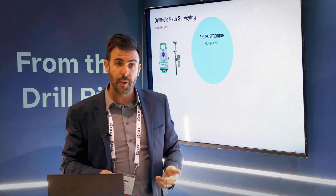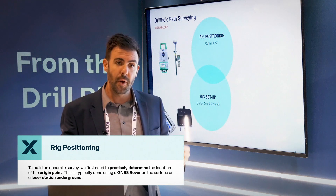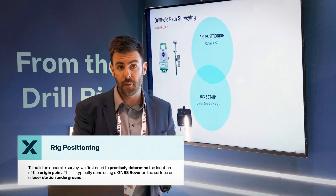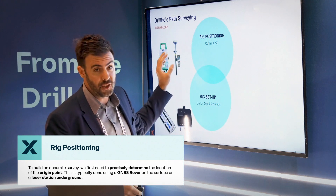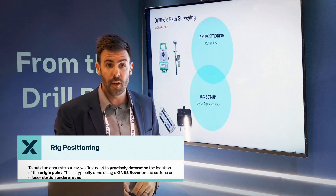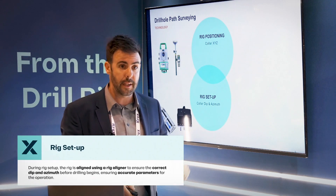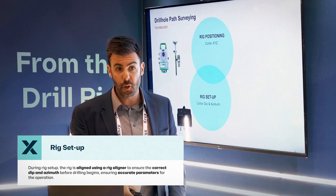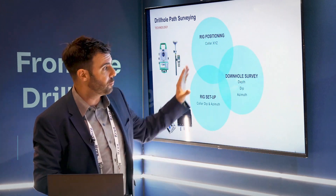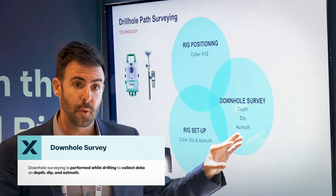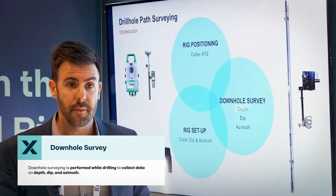In terms of the technology we use to build a survey, there are three parts. The first is knowing the location of the drill collar with very high accuracy — the collar XYZ coordinates — for which we typically use a GNSS rover at the surface or a laser station underground. Then the rig comes in and we use a rig aligner to align the rig to the correct dip and azimuth before drilling starts. Then we bring in a downhole survey tool once drilling has started to collect depth, dip, and azimuth data. Once we have all of that, we can build the survey.